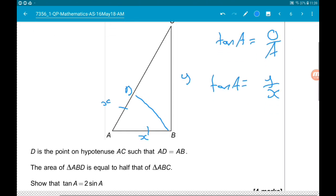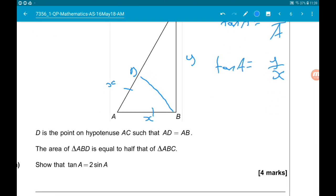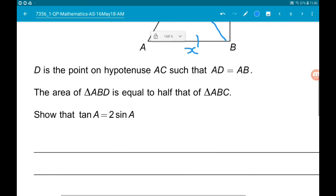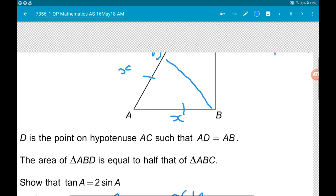Okay. We're told the area of triangle ABD is half the area of ABC. So the area of ABC is base times height divided by 2. So that's going to be XY over 2.